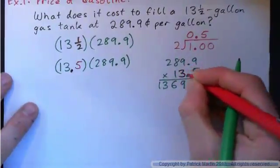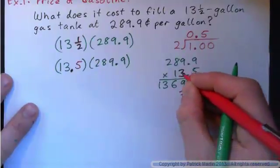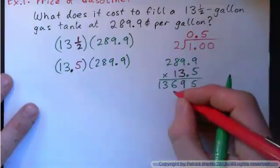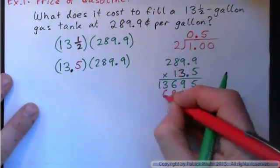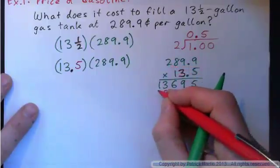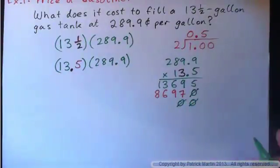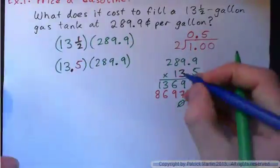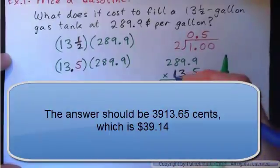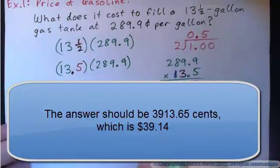Three nines is twenty-seven, carry two. Three nines is twenty-seven and two is twenty-nine, carry two. Three eighths is twenty-four and two is twenty-six, carry two. Three twos is six and two is eight. Put down two placeholder zeros and multiply by one. One times nine is nine. One times nine is nine. One times eight is eight. One times two is two. Add these guys together.